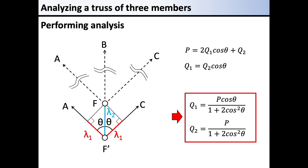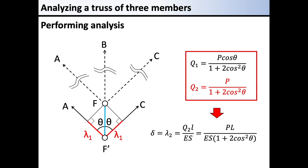Associating this compatibility relationship with the force balance equation, we obtain Q1 and Q2, which were originally unknown values. Once the loads are known, we follow the standard procedure: divide the load by the cross-section area to get the stress, divide the stress by Young's modulus to get the strain, then multiply the strain by the length L to get the elongation. In this problem, we focus on the center member BF to find the displacement at the point of loading.